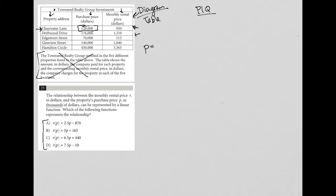So for us, P would not equal one hundred twenty eight thousand. It would actually equal one hundred and twenty eight because this is purchase price in thousands of dollars. And then R, the monthly rental price is equal to nine fifty and that's also for Clearwater Lane.